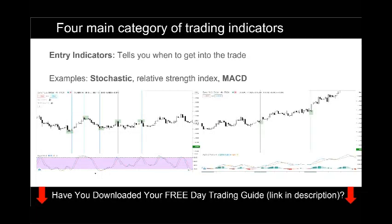The third category is entry indicators, which tell you when to get into the trade. For example, the stochastic: when it hooks up with a crossover, that is your entry trigger — a buy signal. Most traders use it this way: when the stochastic hooks up with a crossover they buy, when it hooks down they sell. The MACD is the same — when there's a crossover sloping up, it's a buy. You can use these kinds of indicators to tell you when to enter the market.